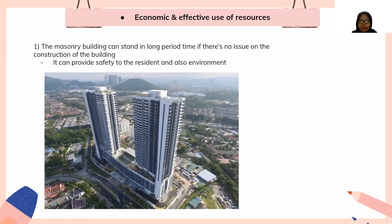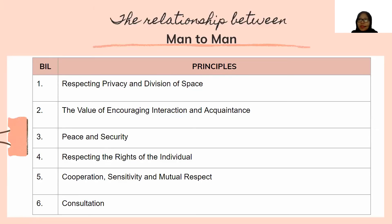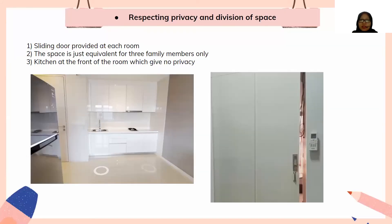For economic and effective use of resources: being a concrete building, it can stand for a long period of time if there are no construction issues, providing safety and a stable environment for residents. Moving on to the relationship between man and man, we have six principles: respecting privacy and division of space, encouraging interaction and acquaintance, security, respecting individual rights, cooperation and mutual respect, and consultation.